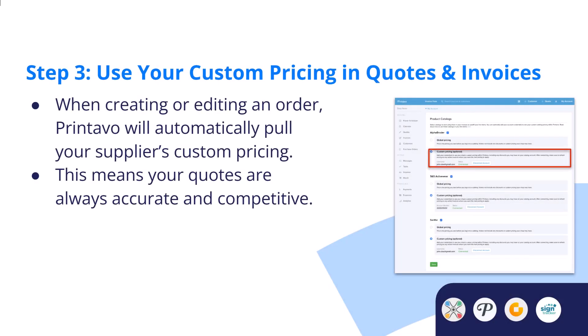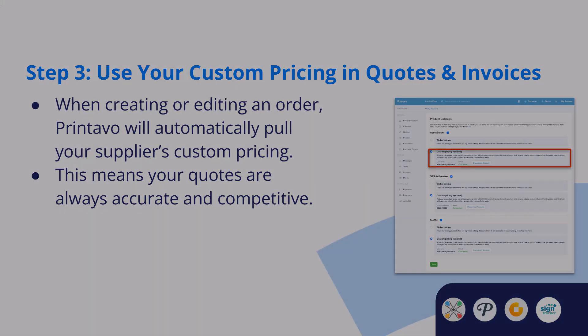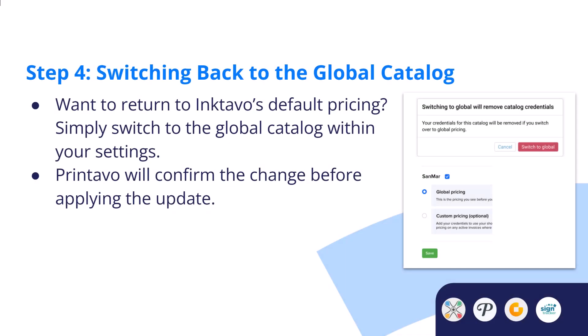Step three: use your custom pricing in quotes and invoices. When creating or editing an order, Printavo will automatically pull your supplier's custom pricing, so your quotes are always accurate and competitive. Step four: switching back to the global catalog. Simply switch to the global catalog within your settings, and Printavo will confirm the changes before applying the update.